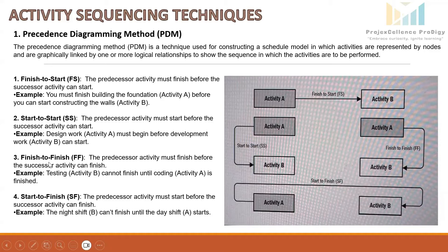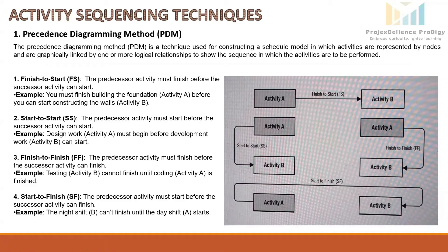The third relationship is Finish to Finish, FF. The predecessor activity must finish before the successor activity can finish. For a software project, the testing activity B can only finish once the coding activity A is finished. Another example: quality inspection, which is activity B, cannot finish until the complete painting, activity A, is finished.